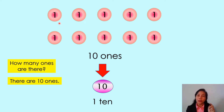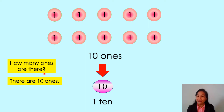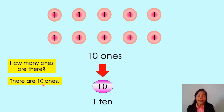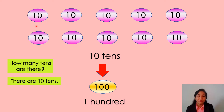Look at this number. What number is it? Very good, it's number one. How many ones are there? Let's count: one, two, three, four, five, six, seven, eight, nine, ten. There are ten ones. Ten ones is the same as one ten.